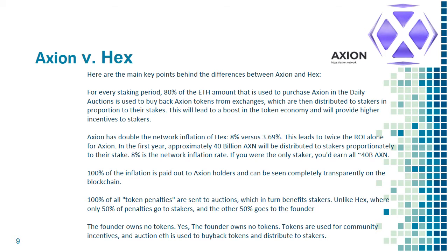100% of all token penalties are sent to auctions, which in turn benefits stakers — unlike HEX, where only 50% of penalties go to stakers and the other 50% goes to the founder. The founder owns no tokens. Tokens are used for community incentives, and auction fees are used to buy back tokens and distribute to stakers.